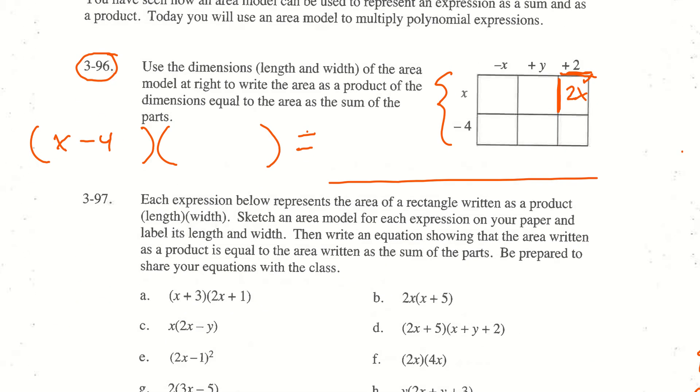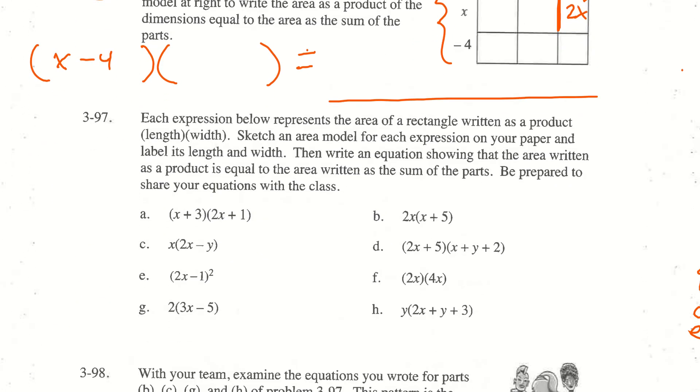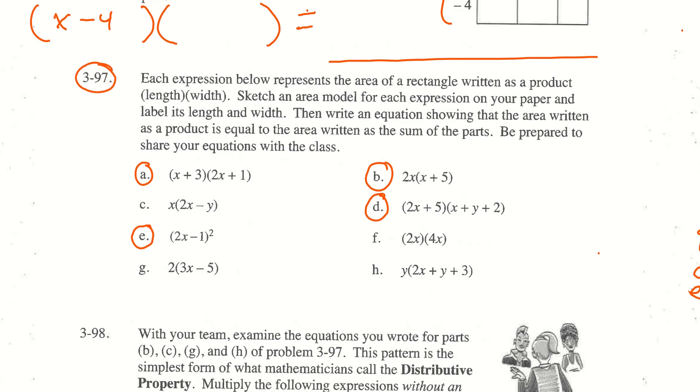On question 97, I want you to do something similar. For this one, I'm just going to have you do a. So yes, we are doing 97, but I want you to do 97a, I want you to do b, I would like for you to do d and e. Be careful on e. Remember when you square something, that means you're multiplying it by itself, so that's how you're going to set up the area model. Show the area model and then show that. You're going to be writing this, and then you're going to write that it equals the other things.